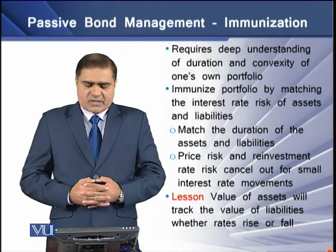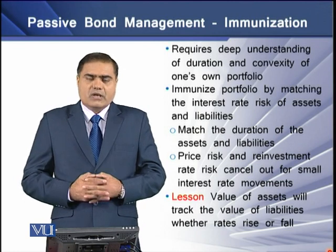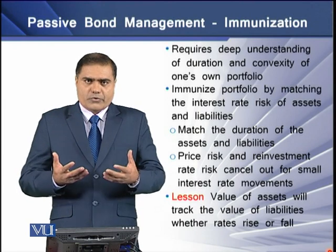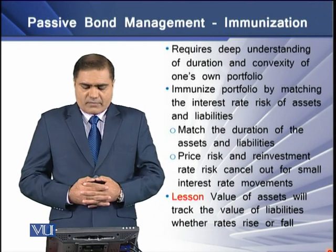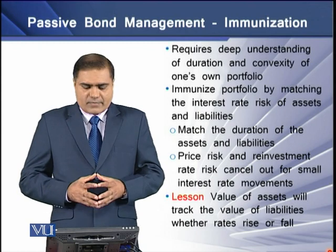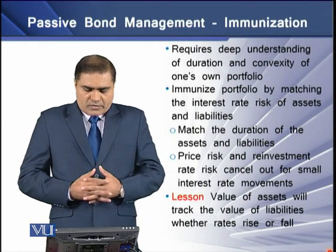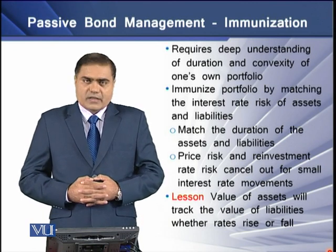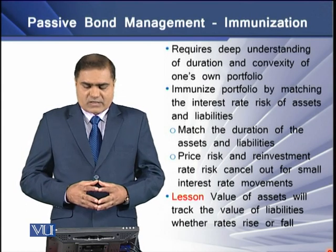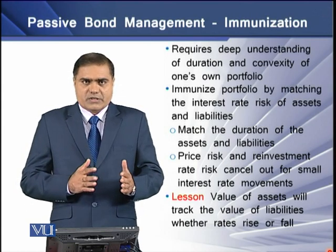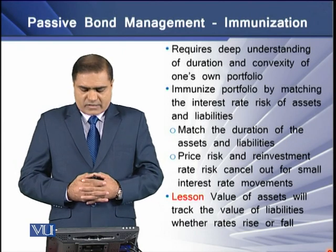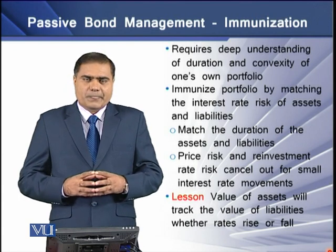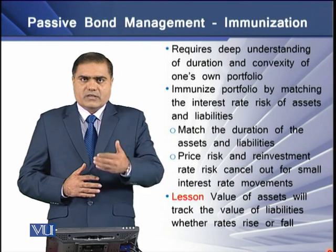Immunization requires a deep understanding of duration and convexity of a bond portfolio by the portfolio manager. The immunization portfolio works by matching the interest rate risk of assets and liabilities. To do this, we first match the duration of assets and liabilities, then determine the price risk and reinvestment risk, because these two cancel out for small interest rate changes. The value of assets will then track the value of liabilities whether the interest rate falls or rises.